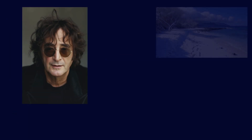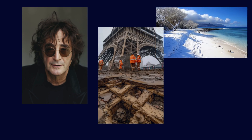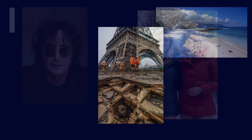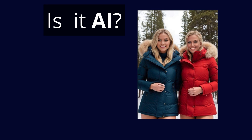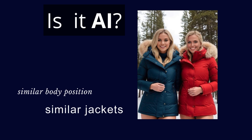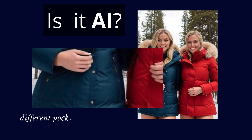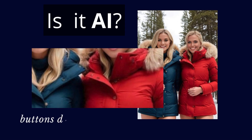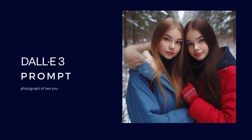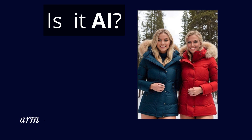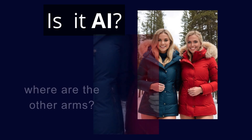As these generators evolve, distinguishing between human-made and AI-created images gets trickier. But if you look closely, you can spot some clues. AI-generated images might seem cartoonish or exhibit a painterly quality, or have elements that defy reality. DALL-E 3, for instance, intentionally adds a painterly touch to people. AI also sometimes fumbles with body positioning, producing poses that feel unnatural.